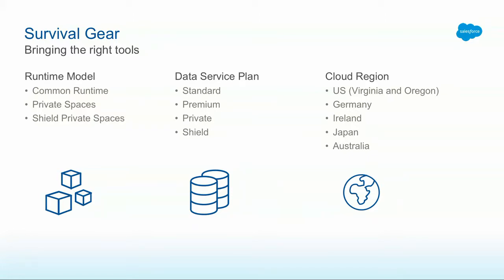I've been a Heroku user, and of course now I work on it — I've been using it for the better part of a decade, starting in college. It supports all the way up to the enterprise. You'll have to decide what's most appropriate: running in that shared runtime, or in our private spaces, which is an isolated network. Every instance of your application runs on its own machine, and you have the flexibility to lock down that network to only allow access from, say, your corporate office network. You also get a set of predictable IP addresses where traffic coming out of your space will originate from, so you can lock down connections that way as well.